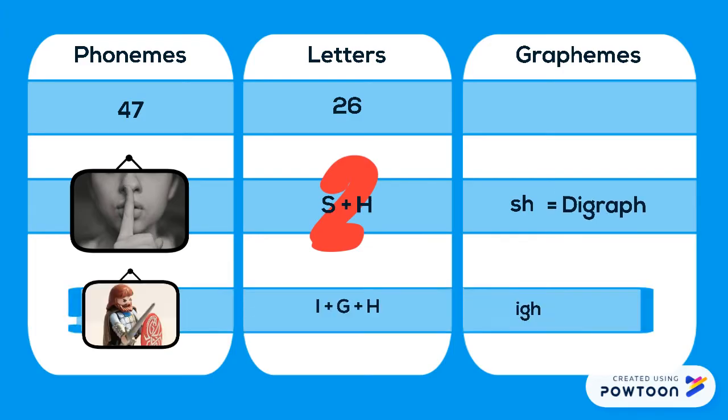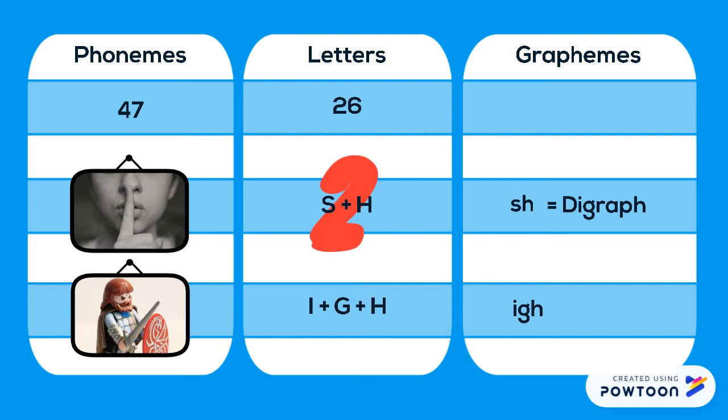Here's a grapheme that can represent the i sound in night. This one has three letters. It's called a trigraph.